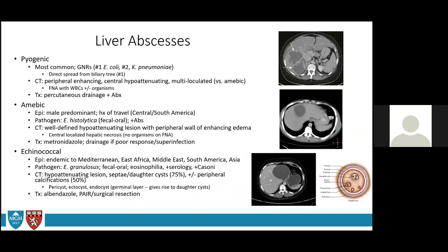Looking at liver abscesses: pyogenic abscesses commonly arise from direct spread from the biliary tree (such as in cholangitis), hematogenous spread, or adjacent organ infection. Patients present with fever, malaise, and right upper quadrant pain. The most common causative organism is gram-negative enteric bacteria such as E. coli. Imaging shows a centrally attenuating mass, sometimes multi-loculated with peripheral enhancement. Treatment is percutaneous drainage and tailored antibiotic therapy.